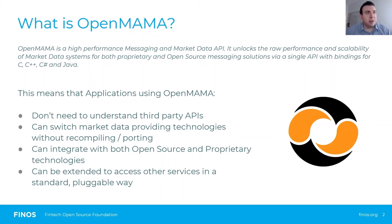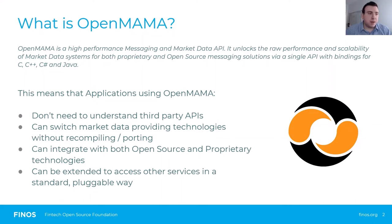Bindings are currently available for C, C++, C#, and Java, including a recent development — C# on .NET Core — so you can use OpenMama with C# on Linux, which is a significant step. Effectively, OpenMama provides that abstraction layer away from underlying technologies so you don't need to be concerned about the underlying platforms that your data is publishing to or subscribing from.